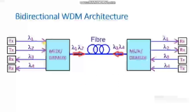In bidirectional architecture, at one side both transmitting and receiving of signals are possible. Here we can see we are using both multiplexer and demultiplexers at one side.